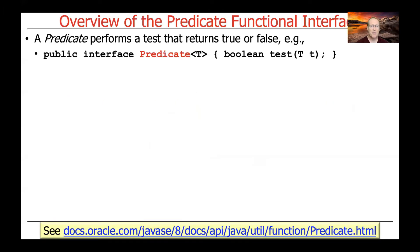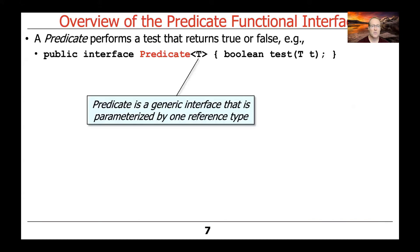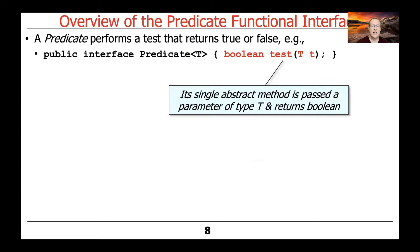What is a predicate? Just like in mathematics, a predicate is something that returns true or false. A predicate is an interface that has a single method called test, and that method takes a parameter of type T, which is parameterized as part of the interface signature, and the test method returns a Boolean. The predicate is a generic interface parameterized by one reference type, meaning you can't have a predicate of a primitive type like int or char — you'd need a wrapper like Integer, Double, or Long.